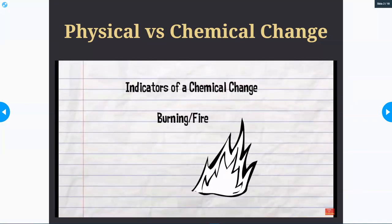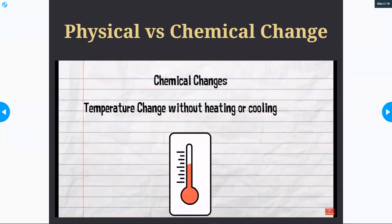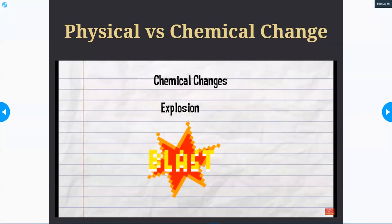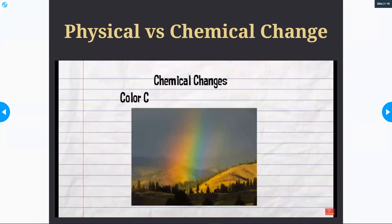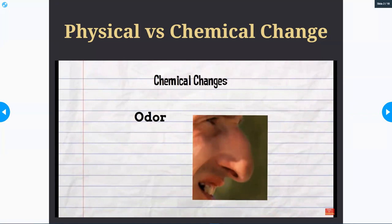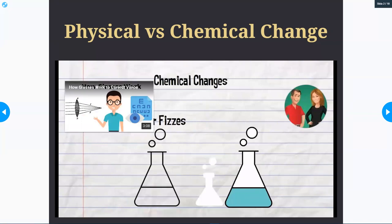First, if you see burning or fire you have a chemical change. Second, a temperature change without heating or cooling is an indicator of a chemical change. Third, an explosion is an indicator of a chemical change. A change in color is a chemical change. A change in odor can be a clue that a chemical change has occurred. And any time when you mix items and you see bubbles or it fizzes, you have a chemical change.